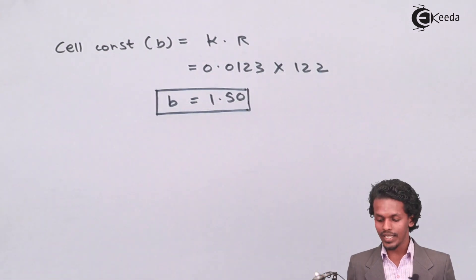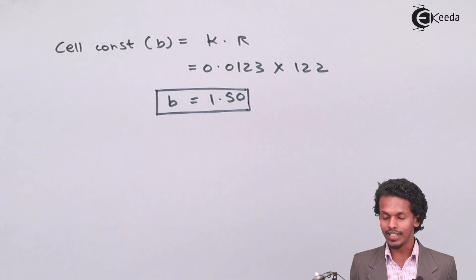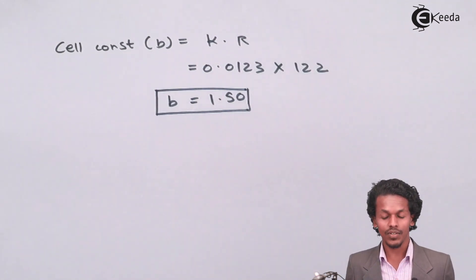So this is the value of the cell constant, and the unit of this would be centimeter inverse.